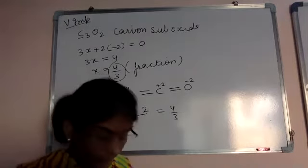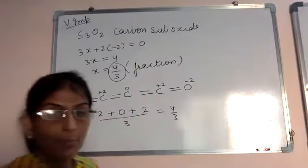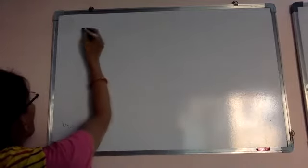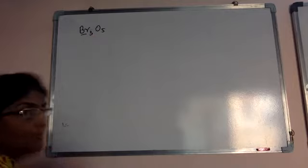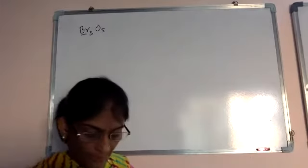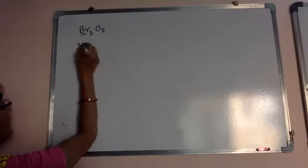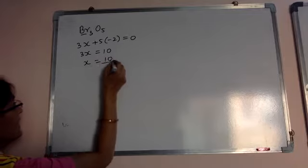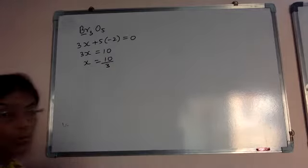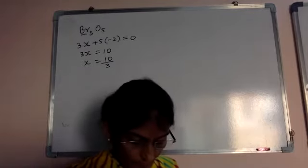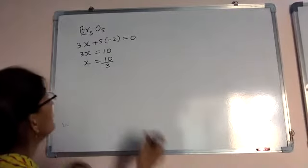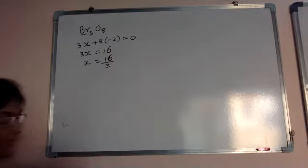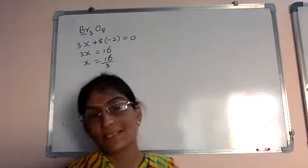See one more example: Br3O8. What is the oxidation state of Br if we calculate normally? Let Br be x and oxygen minus 2. So 3x equals 16 (8 × 2), giving x equals 16 upon 3 — again a fraction. But oxidation number is never a fraction, so this 16/3 is the average oxidation state of the 3 bromine atoms.